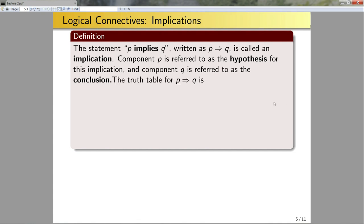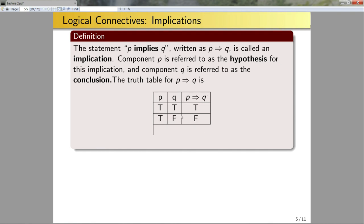The truth table for P→Q is as follows: if P is true and Q is true, then P→Q is true. If P is true but Q is false, then P→Q is false. And if P is false, we say that the implication is true. Let's think about why we might want to use this as a truth table for implies.